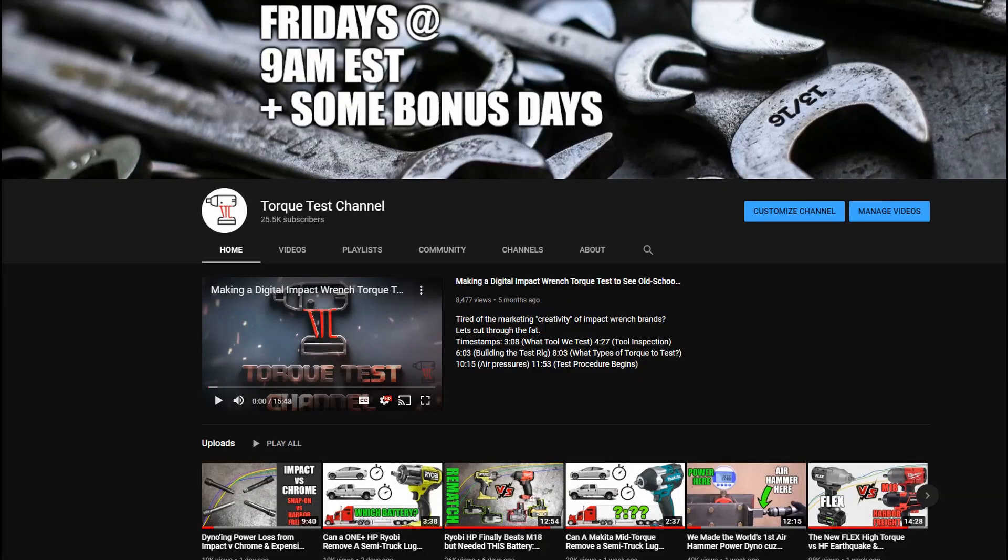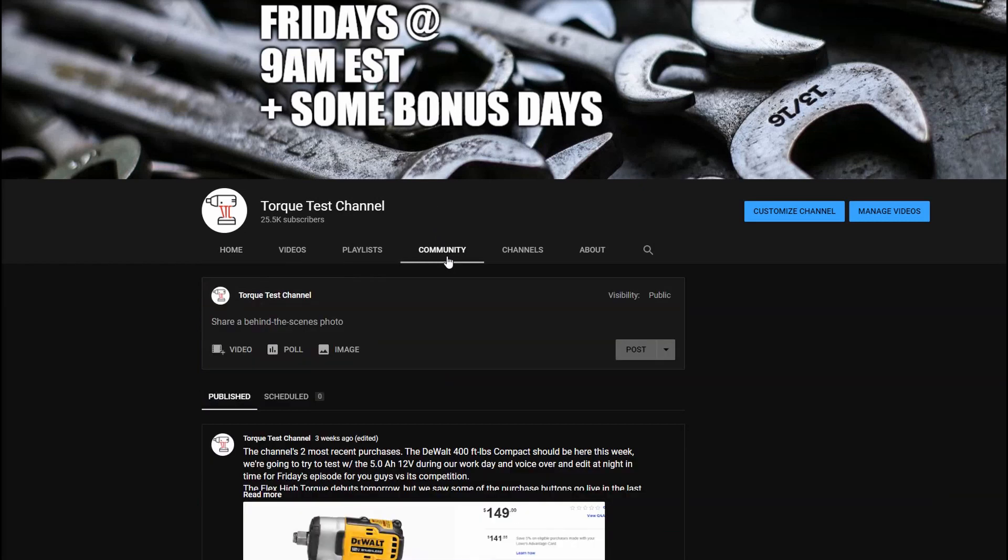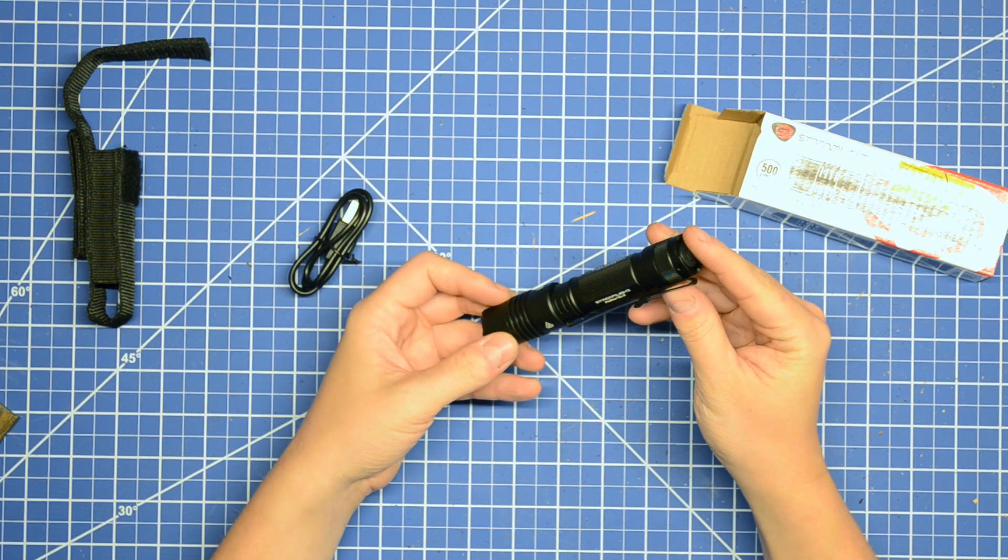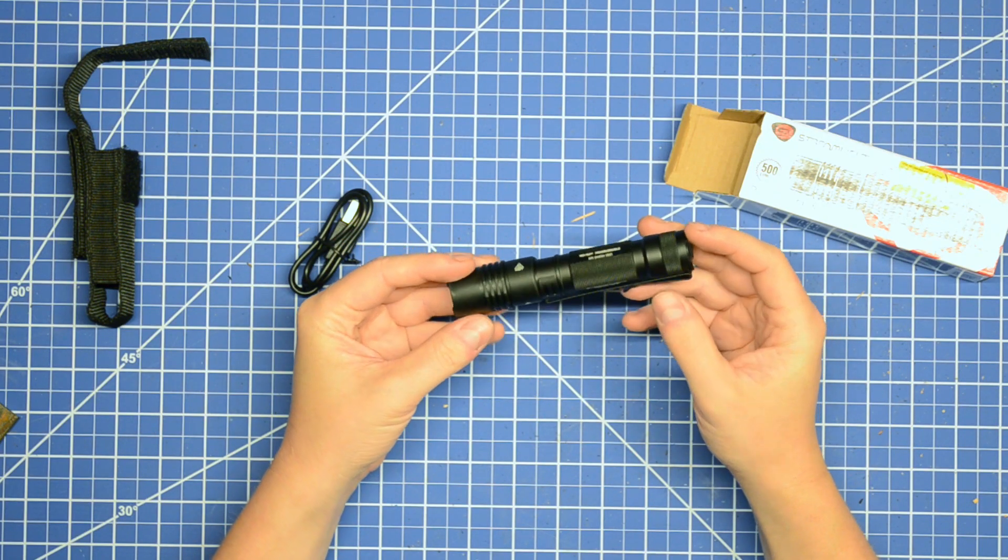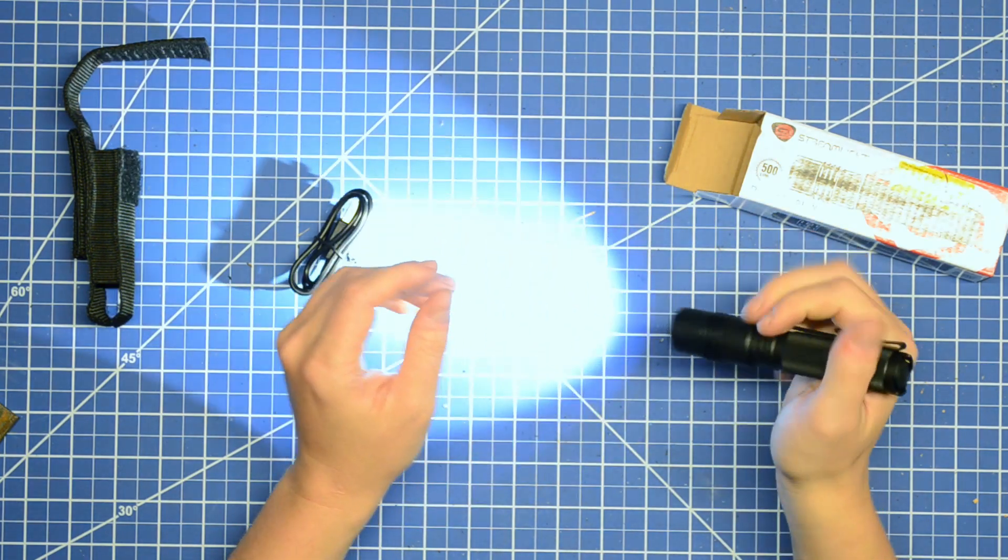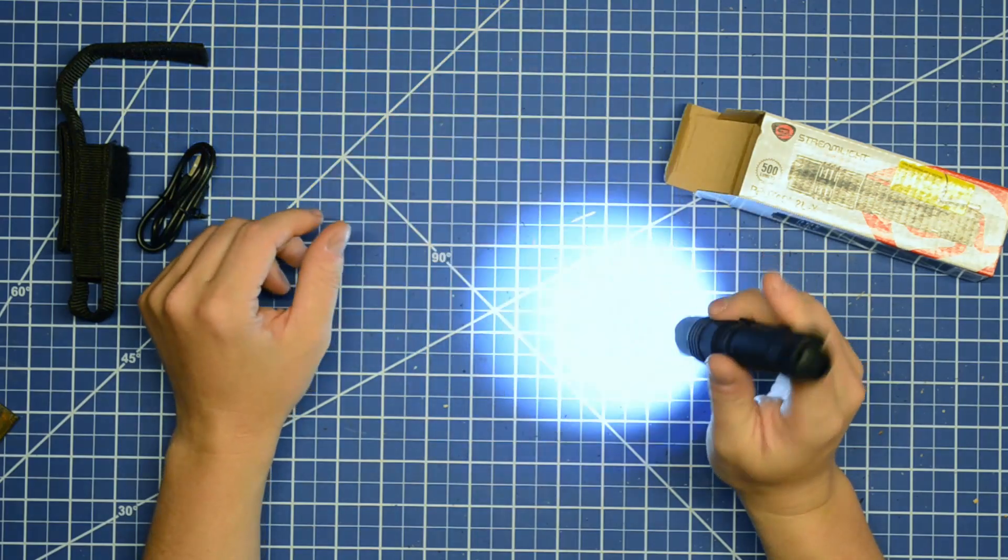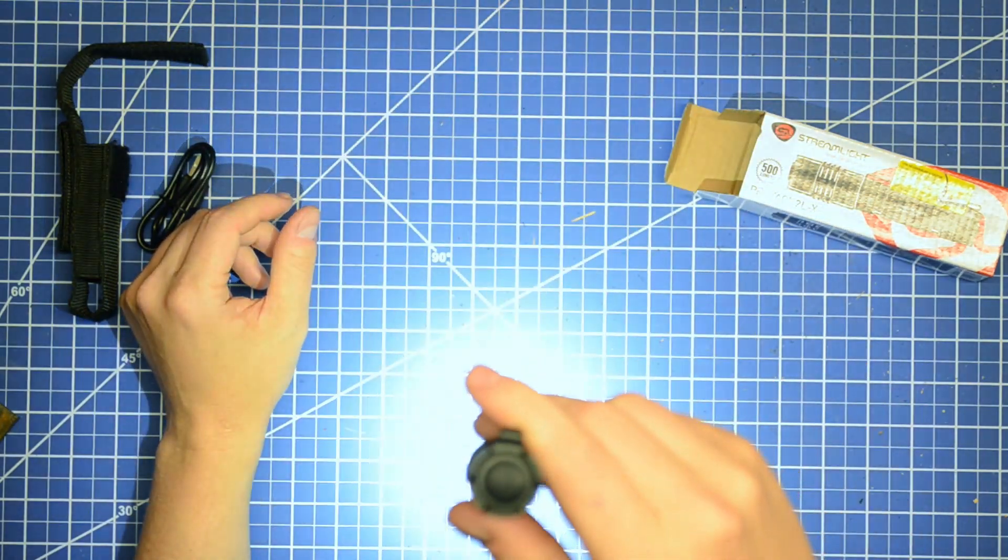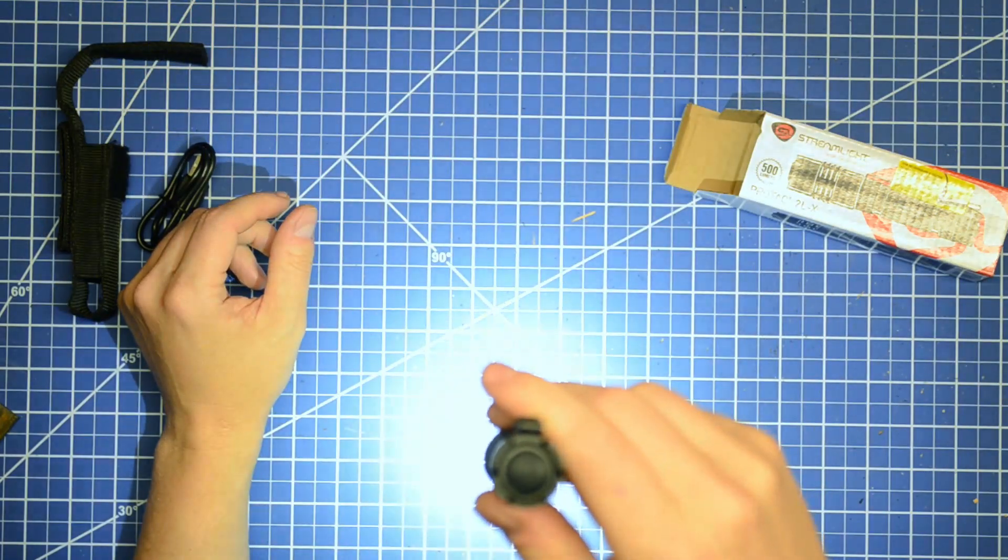When we polled you guys on our community page about what lights you thought were top shelf and wanted to see tested, your top three answers were Snap-on, Streamlight and Astro. Our goal with this initial episode isn't to sort of catch brands red-handed with their advertised lumen numbers.